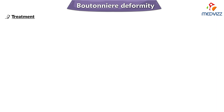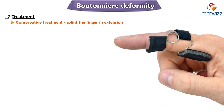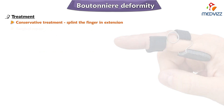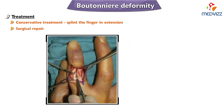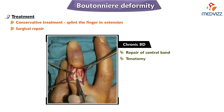Treatment is usually conservative — splinting the finger in extension is recommended. Surgical repair is recommended for chronic boutonniere deformity, including repair of the central band, tenotomy, and arthrodesis.